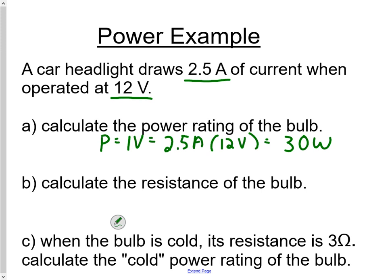The next part of the problem wants us to calculate the resistance of the bulb. To do that, we're going to use V equals IR. Now there are other equations you could use to solve for this—we could also use P equals I squared R—I just find V equals IR a little bit easier. We need resistance to be all by itself, so we're going to go V divided by I equals R. We have 12 volts divided by 2.5 amps, which equals R. R ends up being equal to 4.8 ohms.